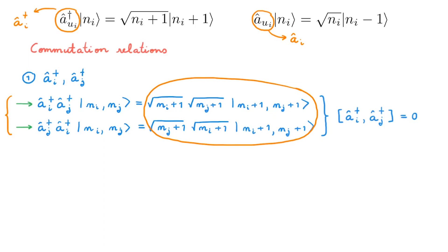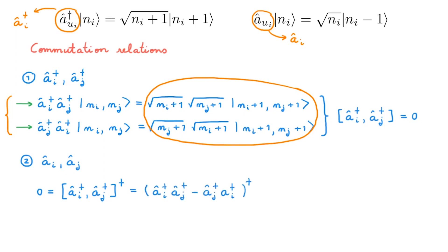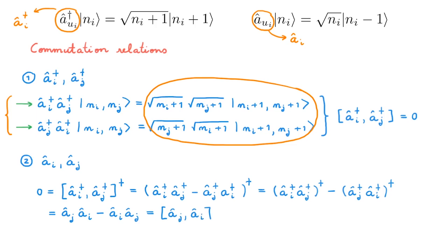Having established the commutation relation for creation operators, what about annihilation operators? Rather than repeating the same exercise, let's take the adjoint of the commutator of the creation operators, write out the commutator, and separate it into two terms. Remembering that the adjoint of a product exchanges the order of the terms, we get the commutator of aJ and aI, which equals zero, so we can write the conventional result that the commutator between aI and aJ vanishes.